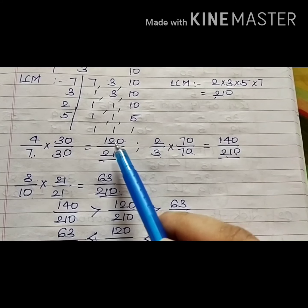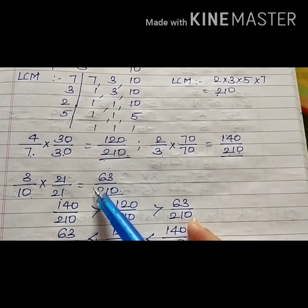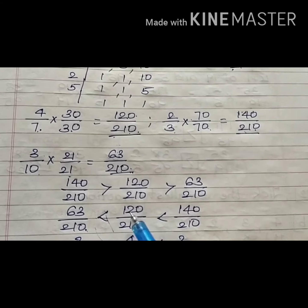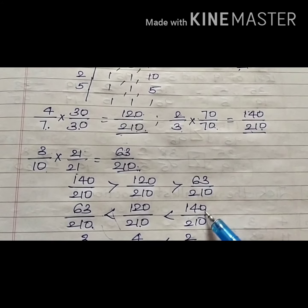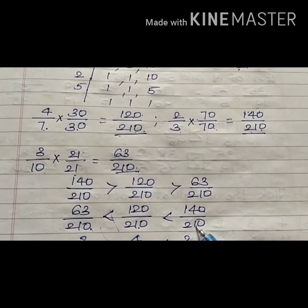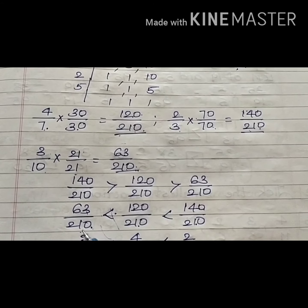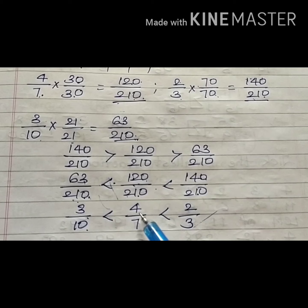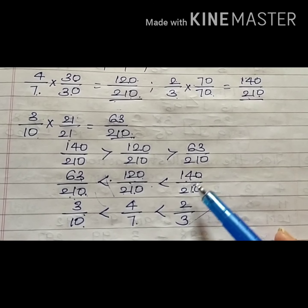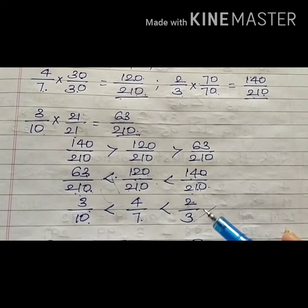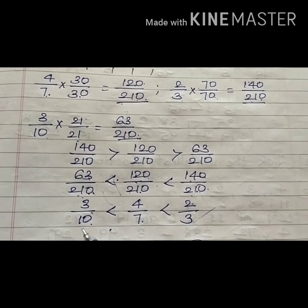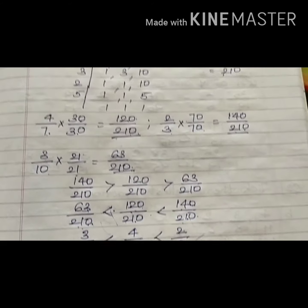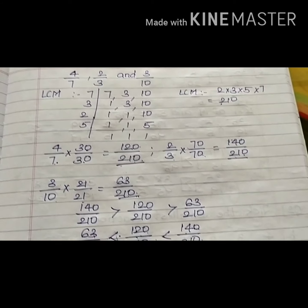Now I compare only the numerators: 120, 140, and 63. The smallest is 63 upon 210, then 120 upon 210, then 140 upon 210. Going back to the original fractions: 63 upon 210 is 3 upon 10, 120 upon 210 is 4 upon 7, and 140 upon 210 is 2 upon 3. To compare unlike fractions with different numerators and denominators, find the LCM and then compare.